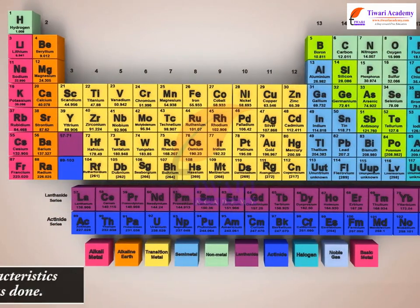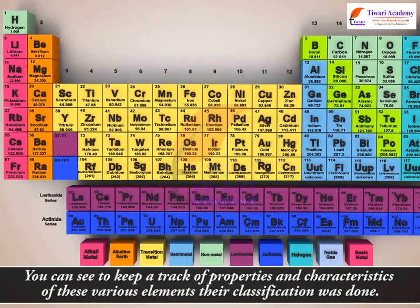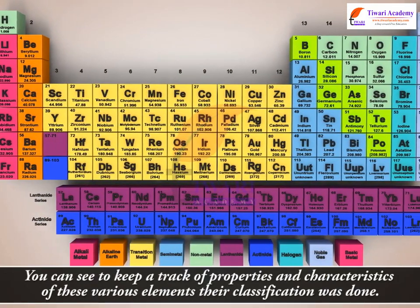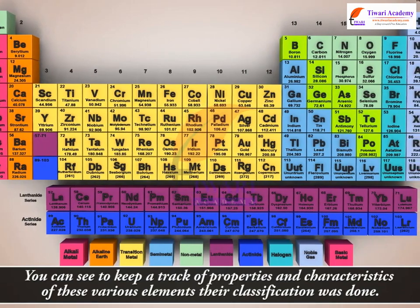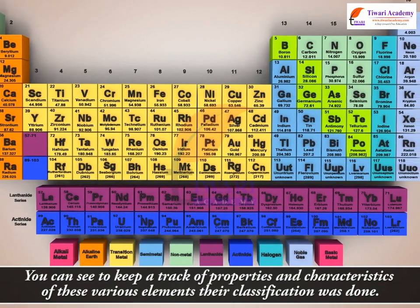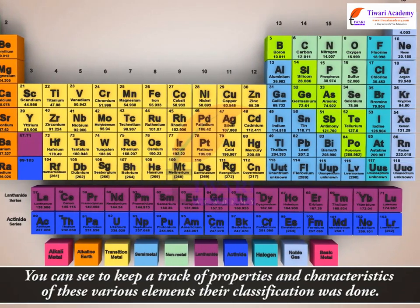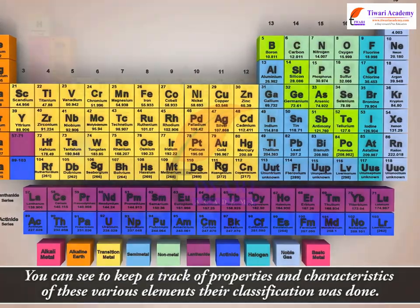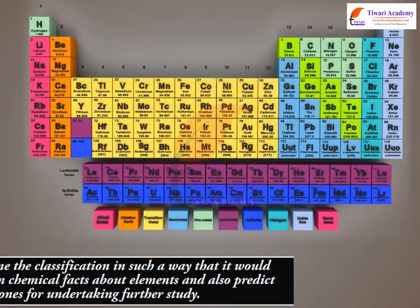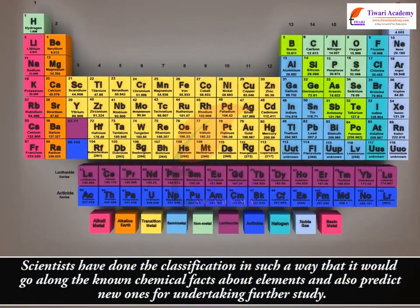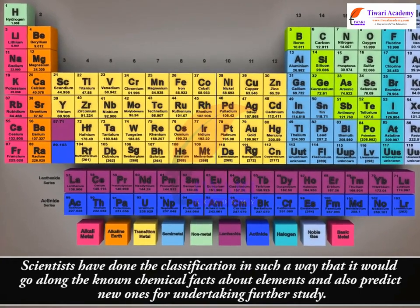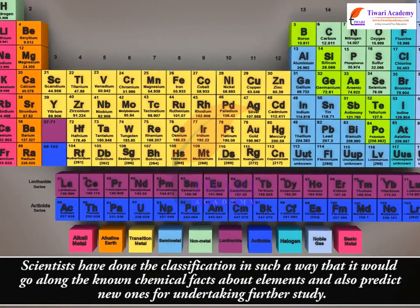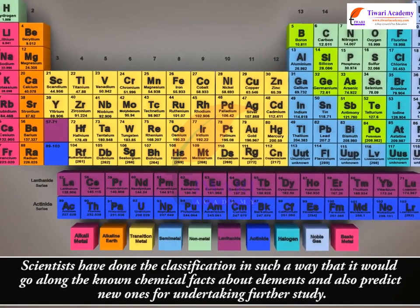Thus, you can see to keep a track of properties and characteristics of these various elements, their classification was done. Scientists have done the classification in such a way that it would go along the known chemical facts about elements and also predict new ones for undertaking further study.